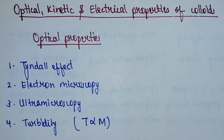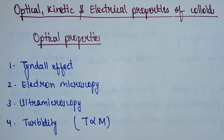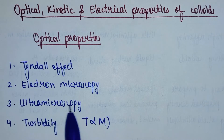The second optical property is electron microscopy. With electron microscopy, we get the actual picture of colloidal particles. The main function of electron microscopy is that its resolving power is very high. We can determine the size, shape, and structure of the particles. Electron microscopy is very useful for this purpose.